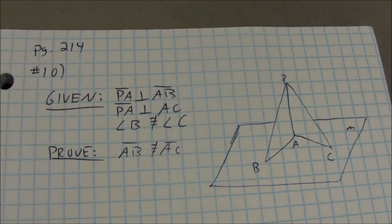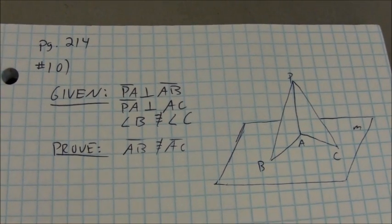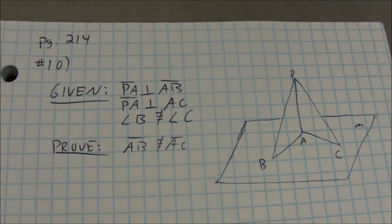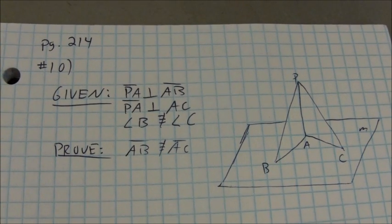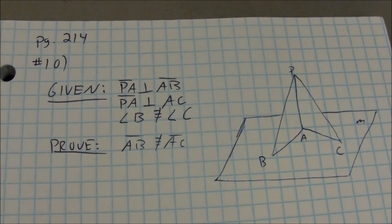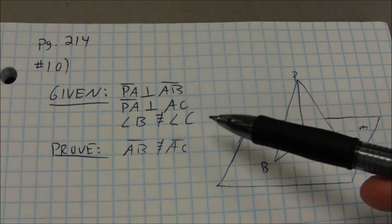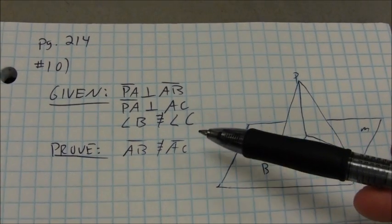This is problem number 10 from page 214 in the Advanced Geometry book. This is an indirect proof. Specifically, the best reason to approach this as an indirect proof is the fact that you have some angles that are not congruent to each other.